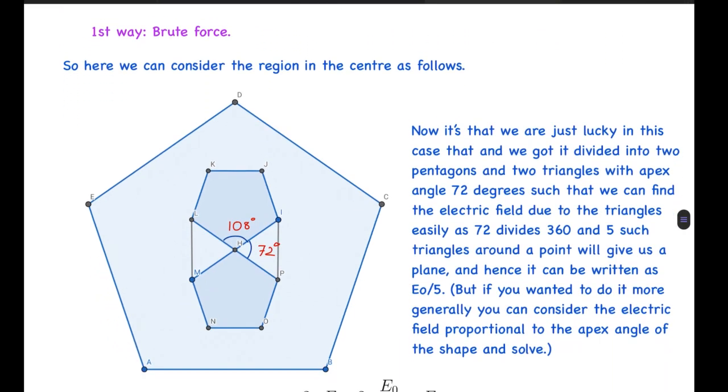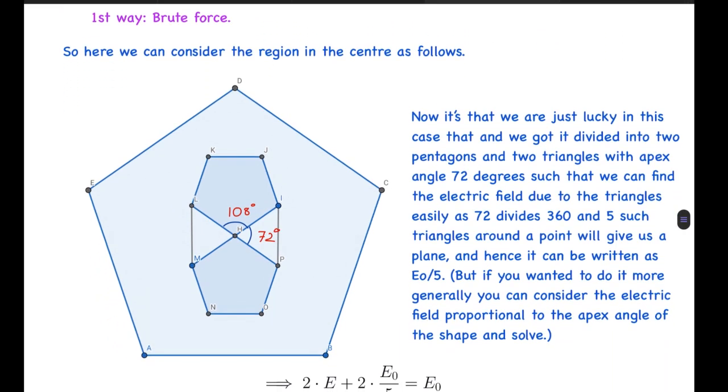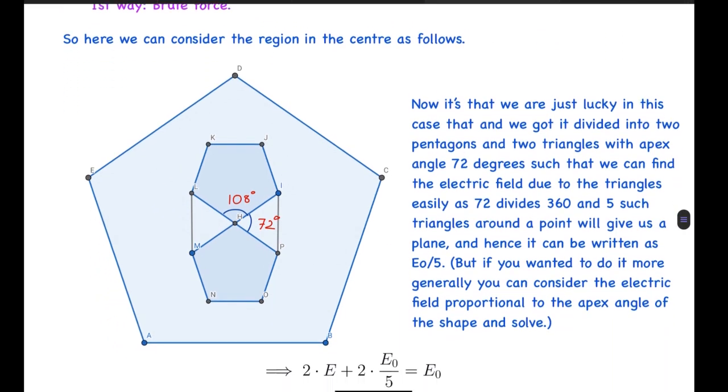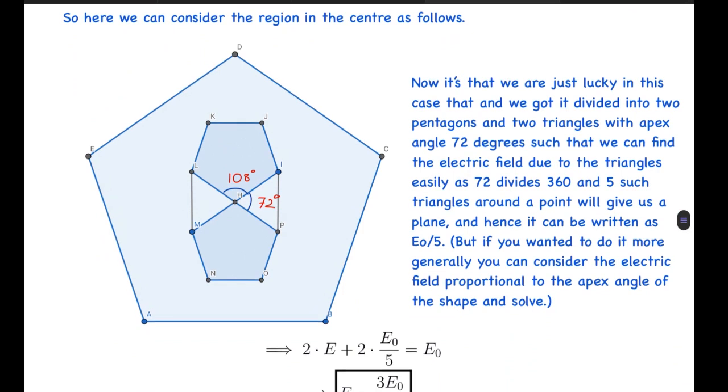Here we can consider the region in the center as follows: we have divided the central 360 degrees in this way - we take two pentagonal plates (equivalent pentagonal plates), and the rest of the area we divided into two isosceles triangles of apex angle 72 degrees.